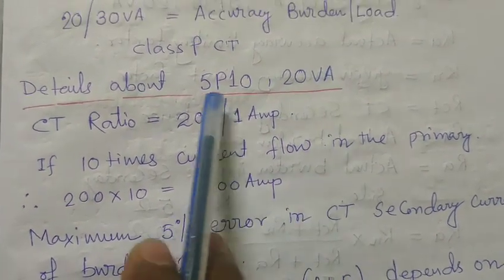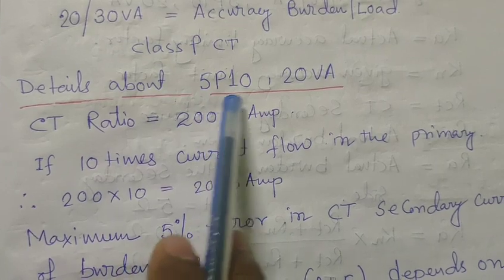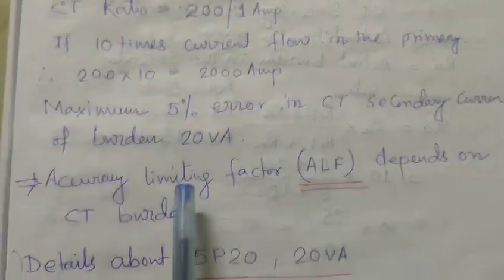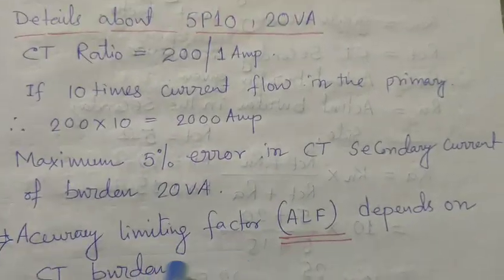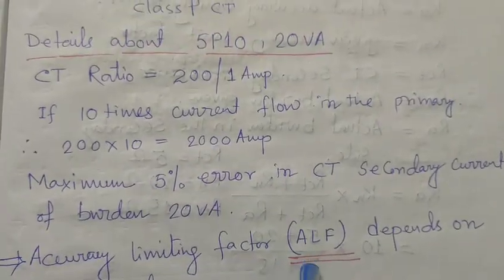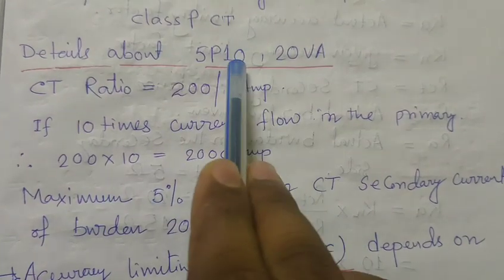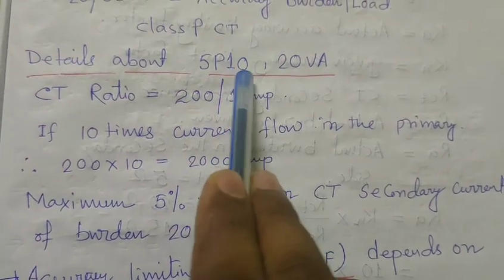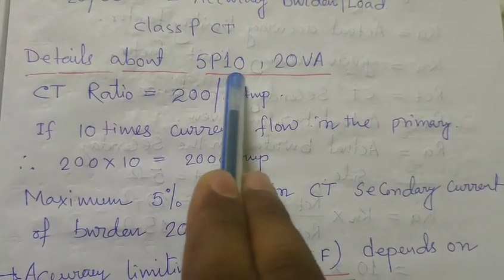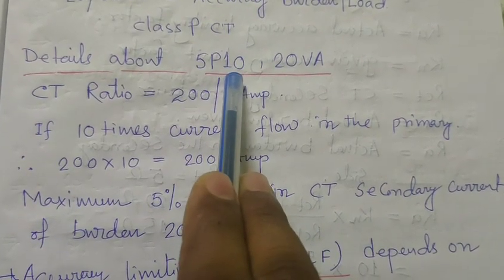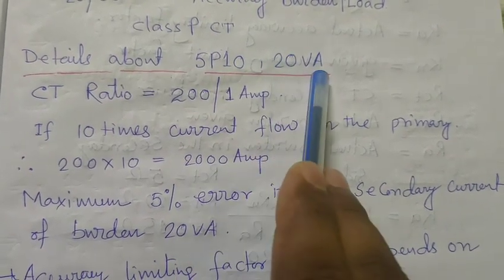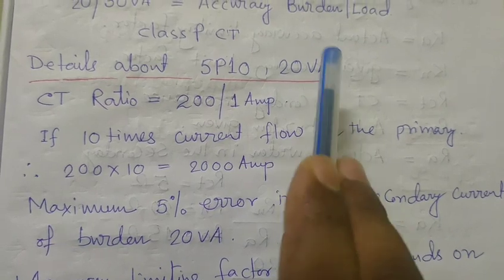That is the meaning of 5P10. ALF — the Accuracy Limiting Factor — depends on the given burden.